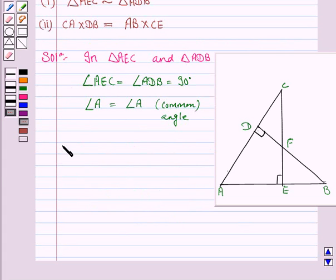Therefore, by angle-angle similarity, triangle AEC is similar to triangle ADB.